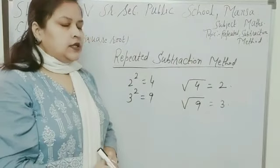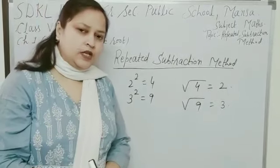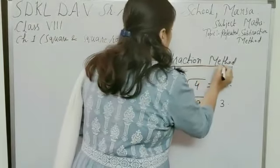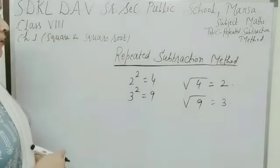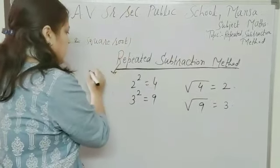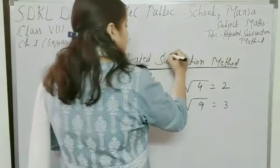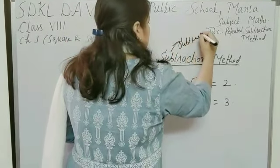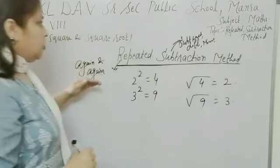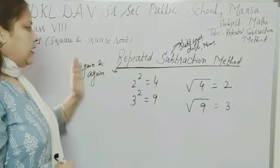Now, we can find the square root of a square number by different methods: repeated subtraction method, prime factorization method, long division method, etc. Today I will discuss repeated subtraction method to find the square root of a square number. First, we will understand the meaning of repeated subtraction method. Repeated means again and again. Subtraction means subtract, difference, minus. Means, we have to find the result by doing again and again subtraction.